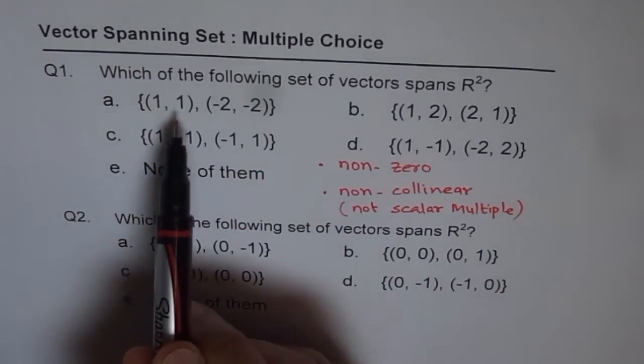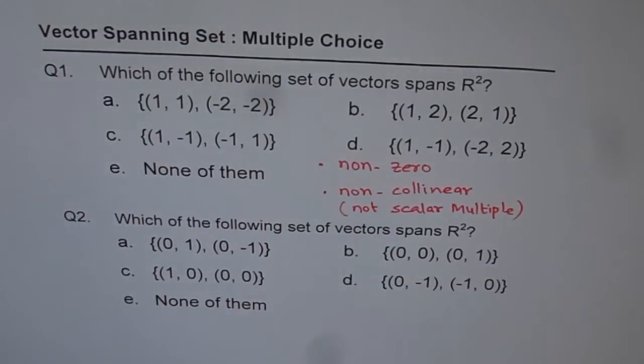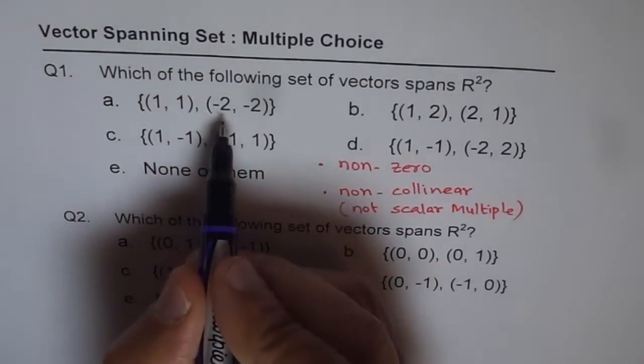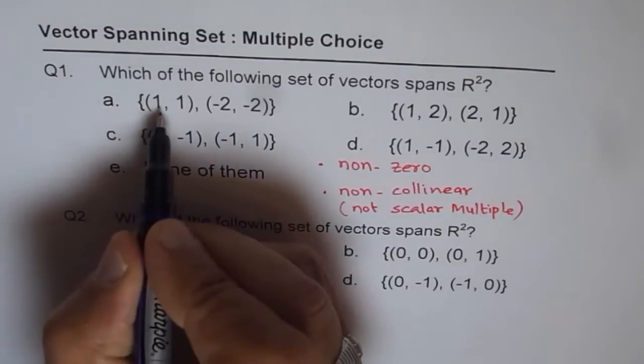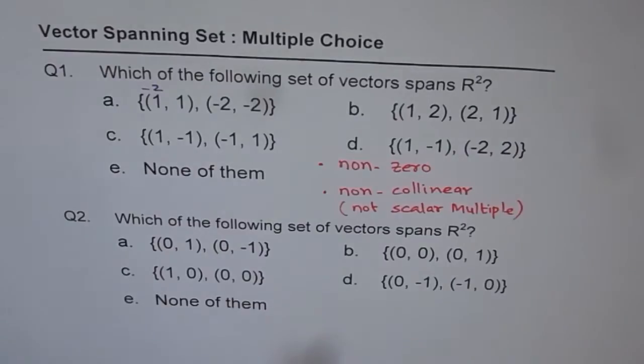Now the first set is (1, 1) and (-2, -2). So this set cannot span since this is a scalar multiple. If I multiply the first one by -2 I get (-2, -2). So it does not work.